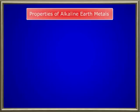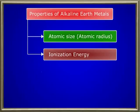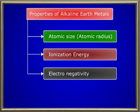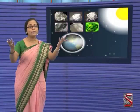Let's now look at the various properties of alkaline earth metals. The table you just saw displays some of the interesting properties of the elements in the periodic table. There are mainly four properties of alkaline earth metals: atomic size or atomic radius, ionization energy, electronegativity, and melting and boiling point.